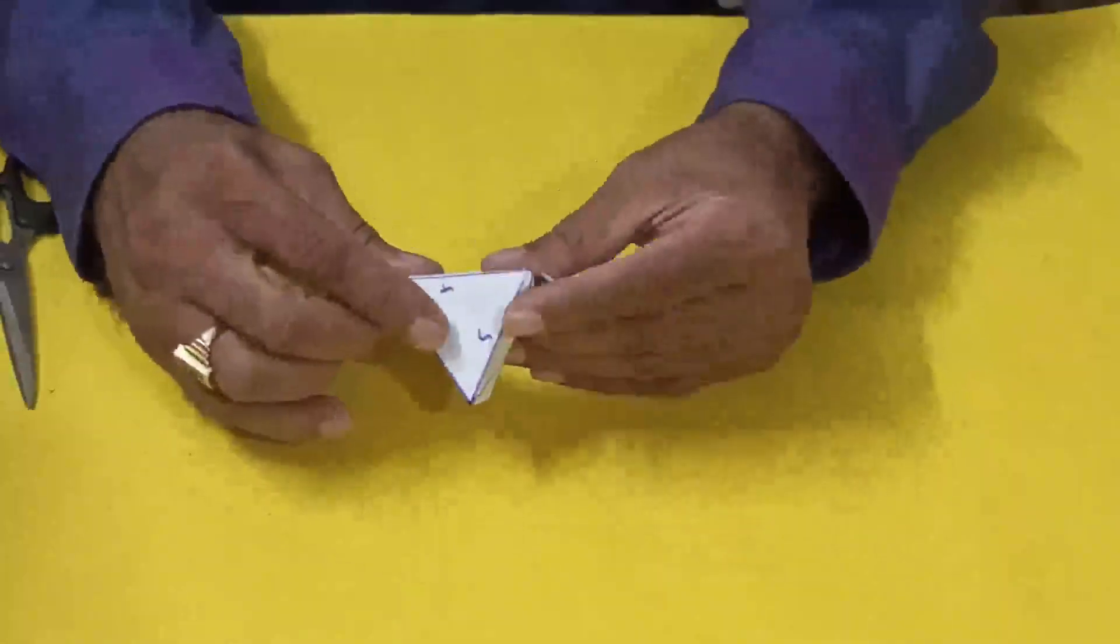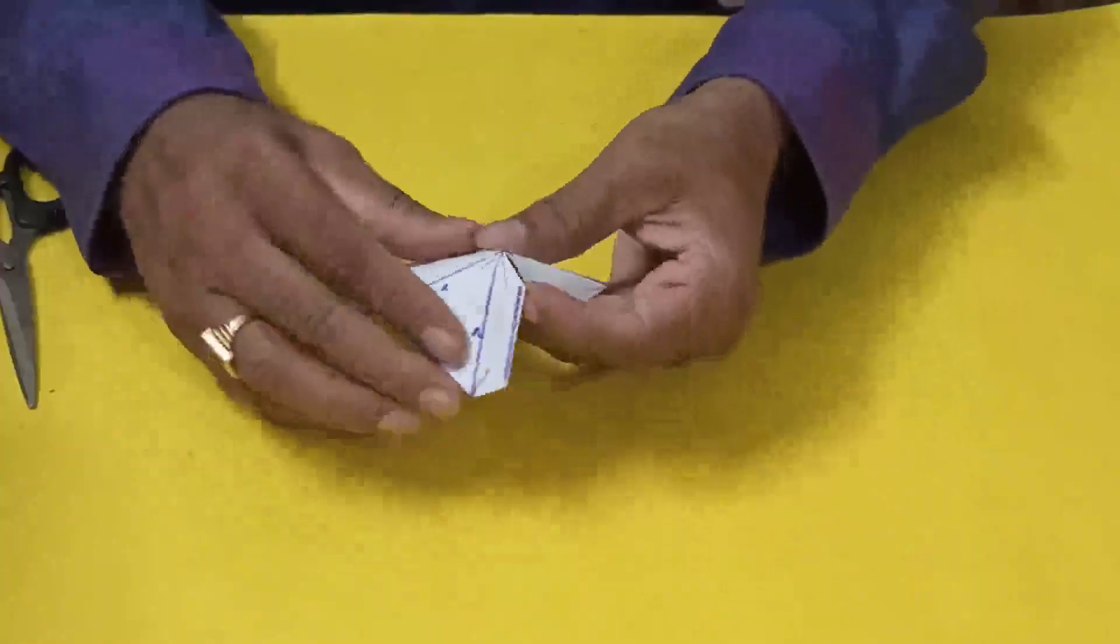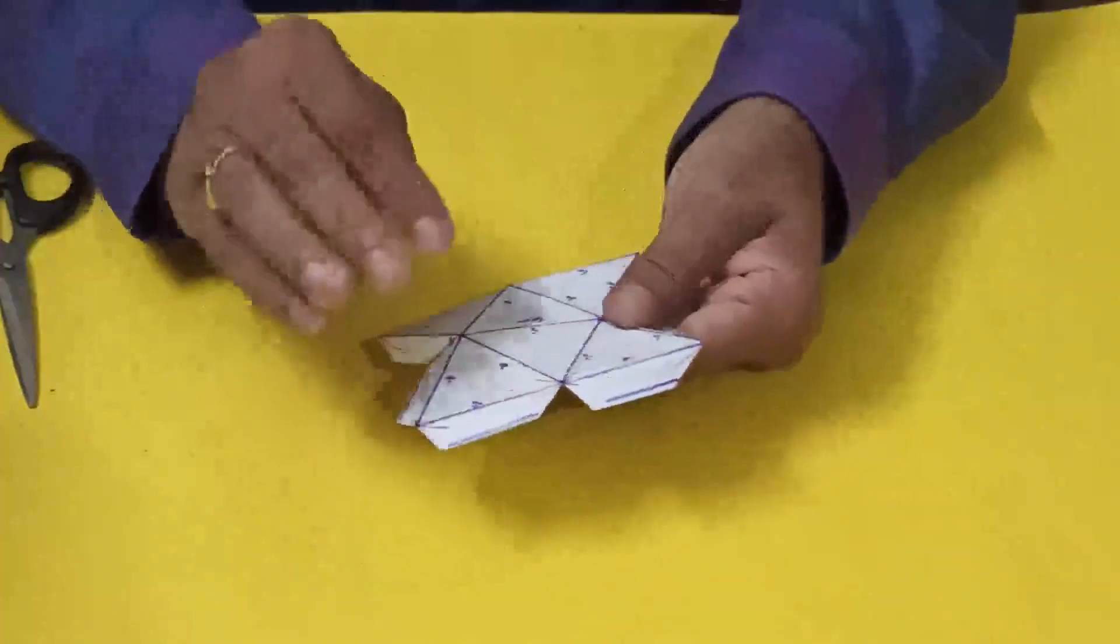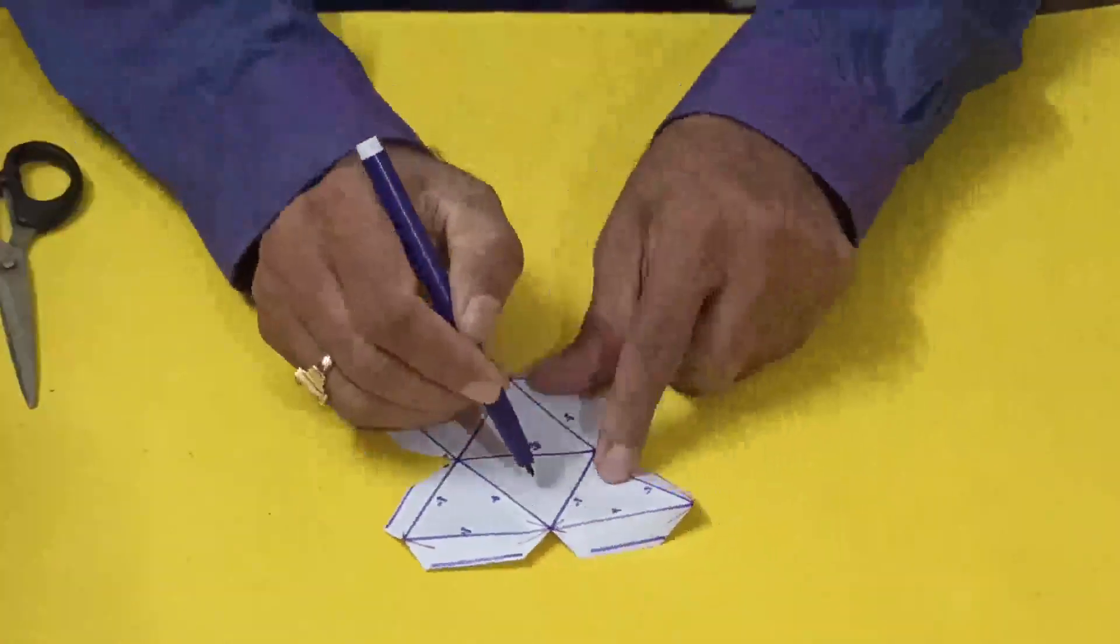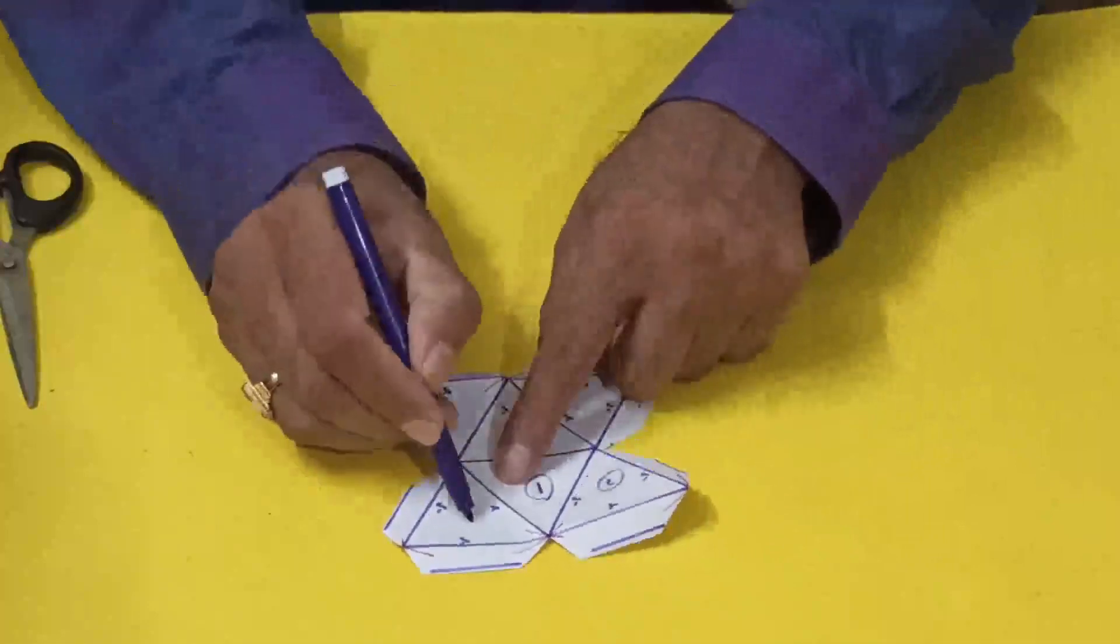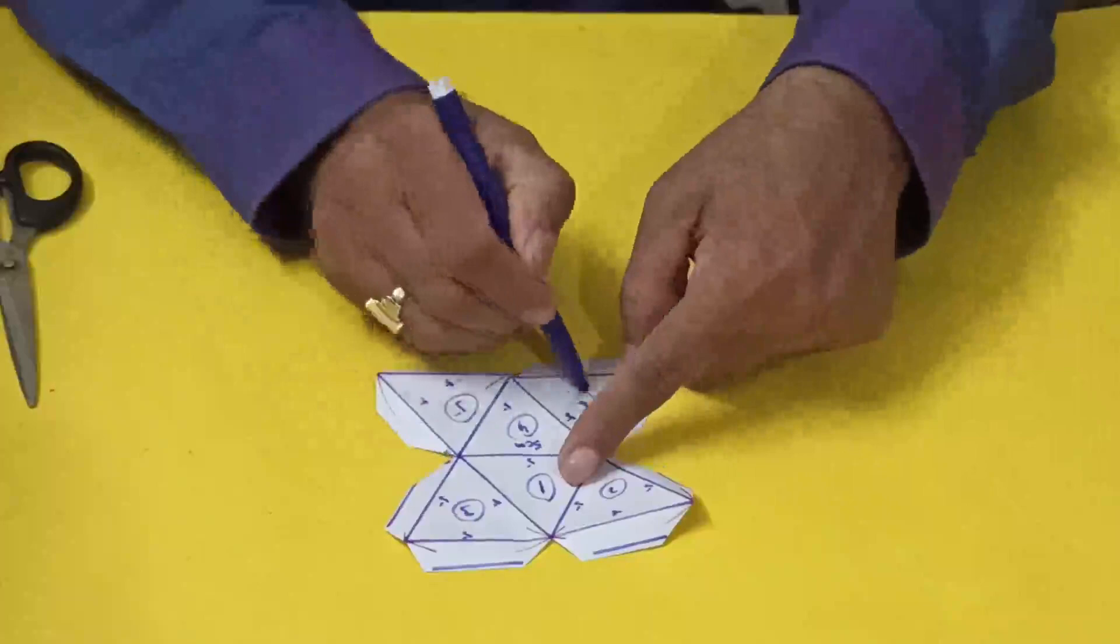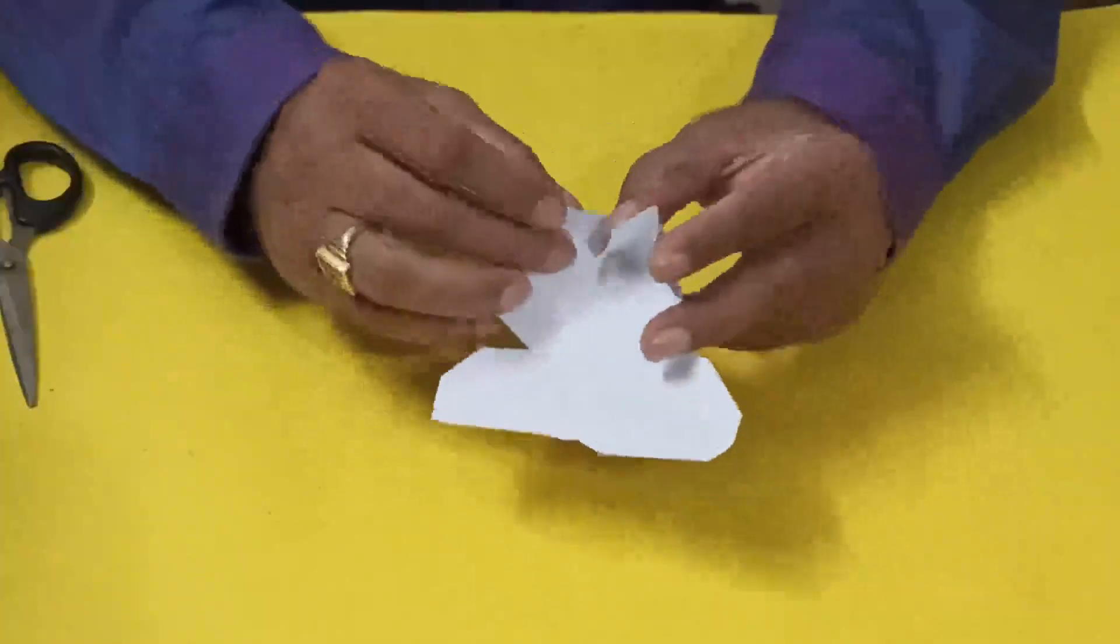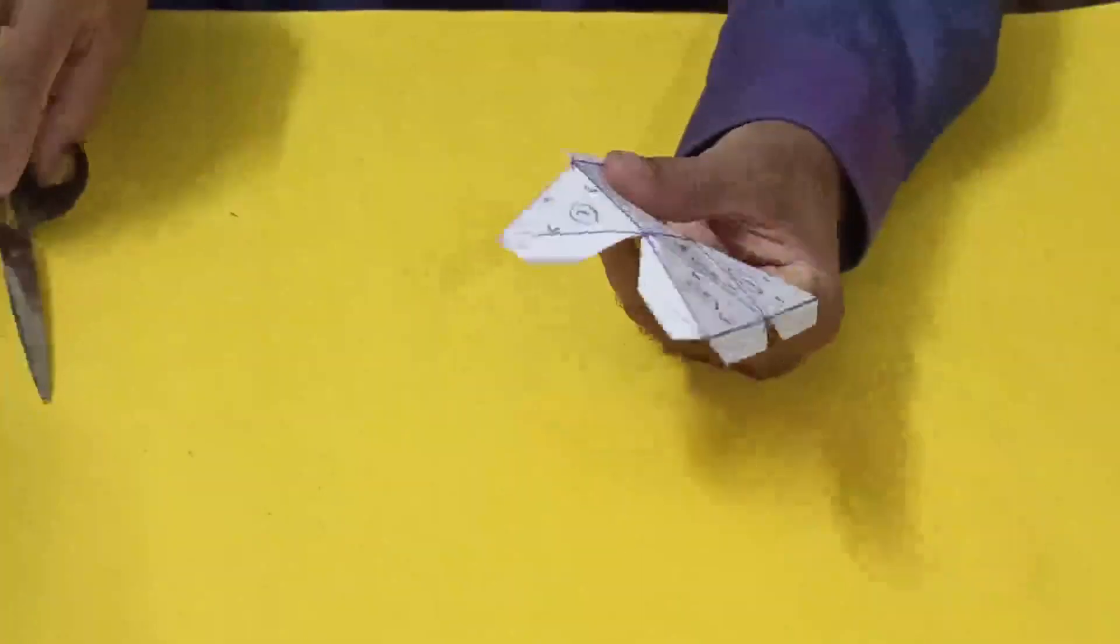Now fold the sides. Here, so see, one two three four five six. Six triangles, here one two three four five and six. Now see wherever extra is there, we'll remove this one.